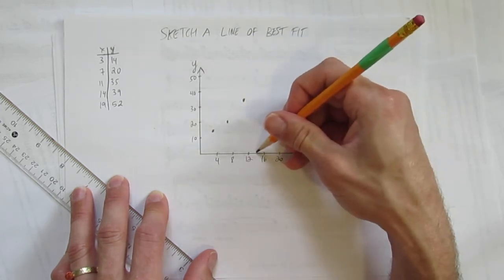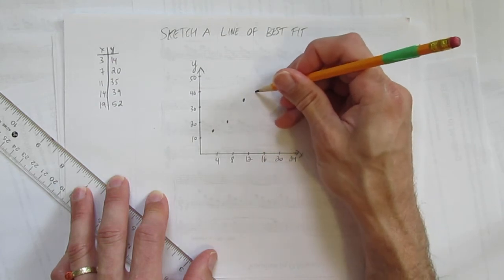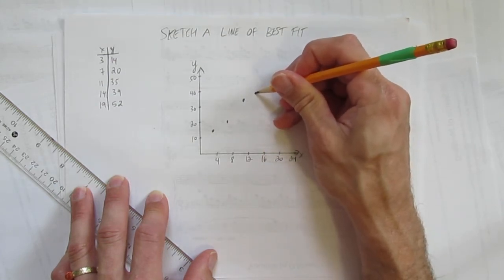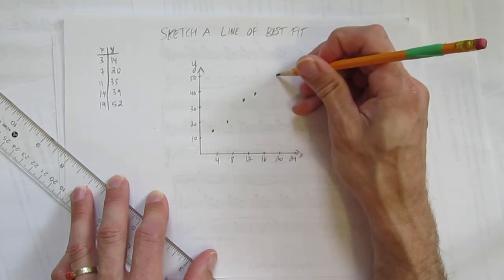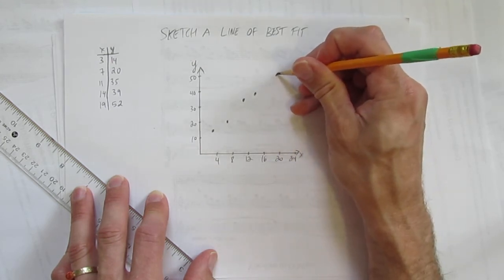And then X of 14, Y of 39, that's about there. And finally, X of 19, Y of 52, that's about there.